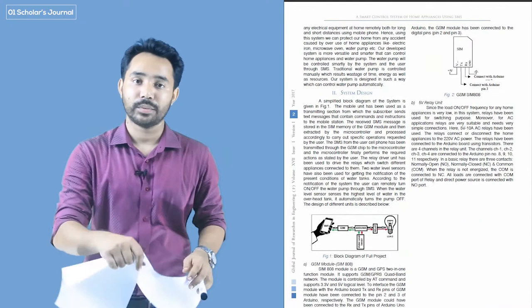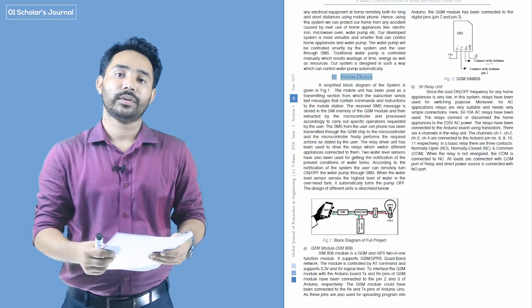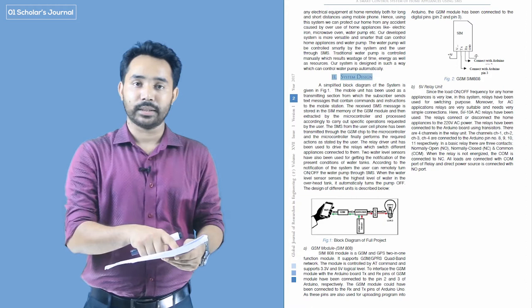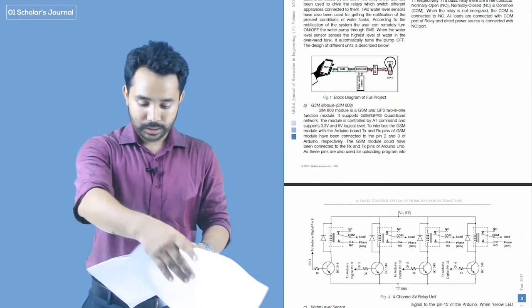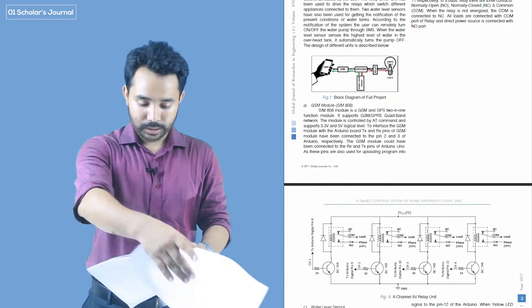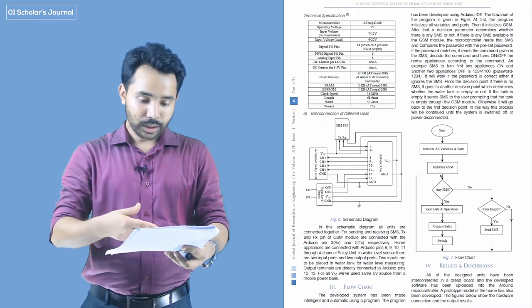The introduction of the project will depend on how to do the work of the project. So we have system design and experimental work. Here we have a project of system design. Then we have a block diagram of the project and subsections. So we have a flow chart — a term chart.